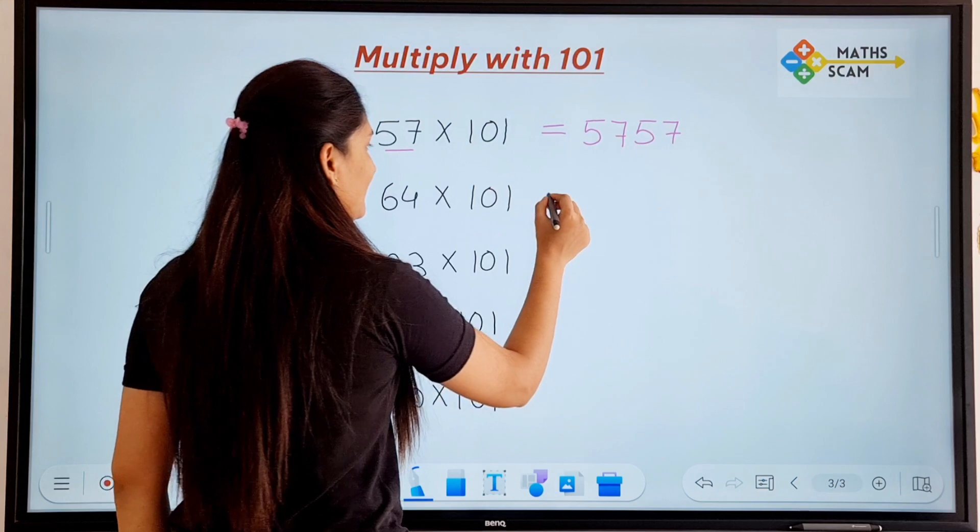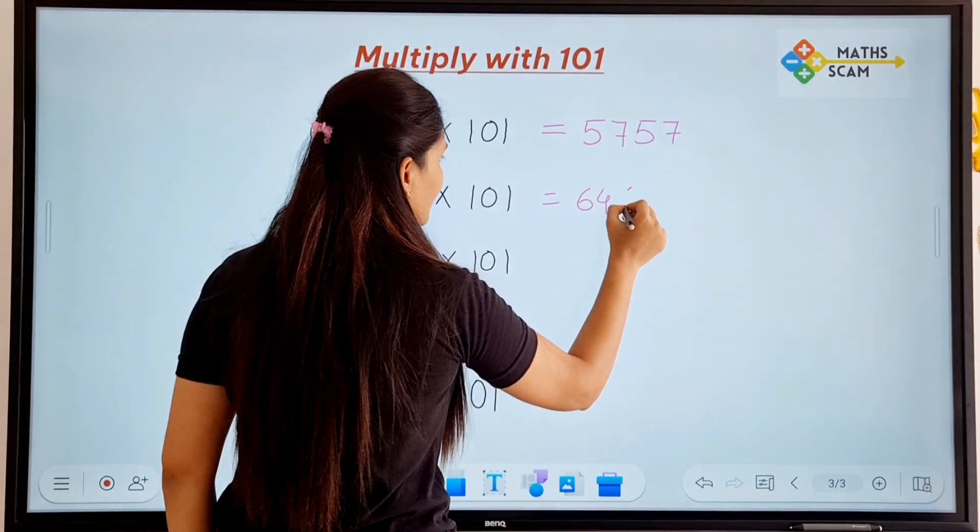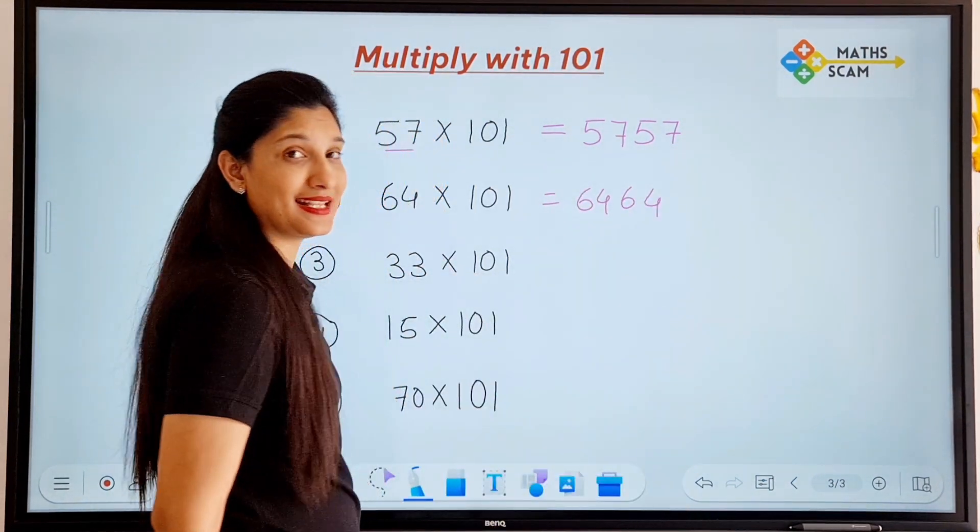64 times 101. Really? 64, 64 that is 6,464.